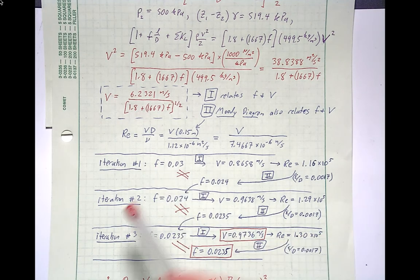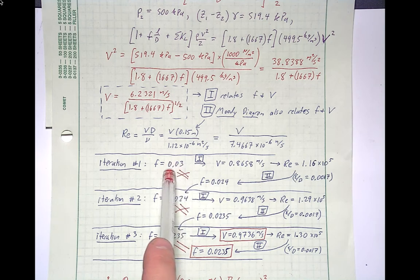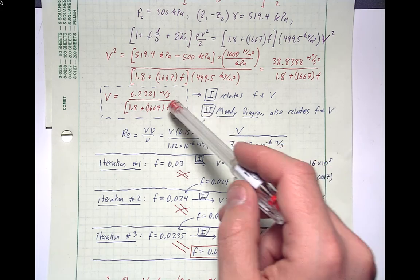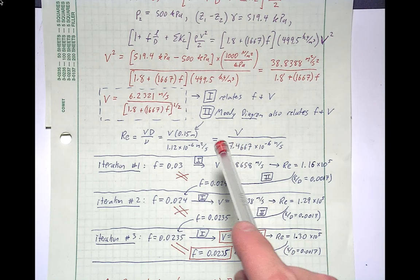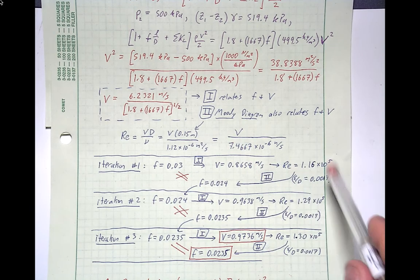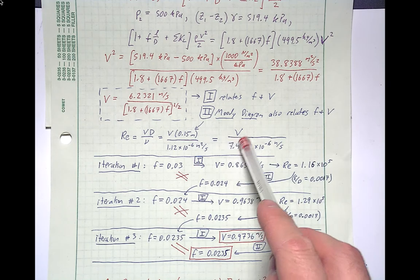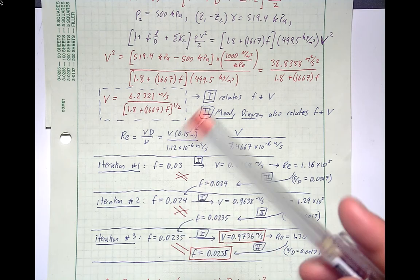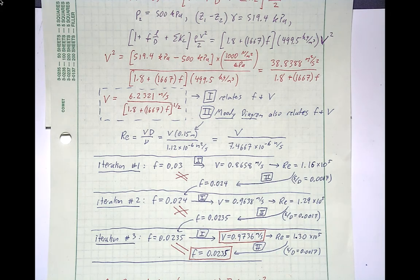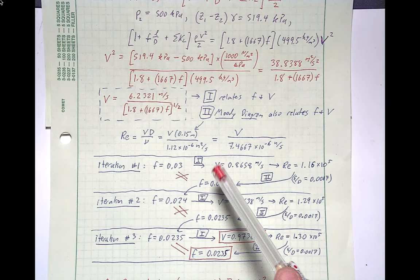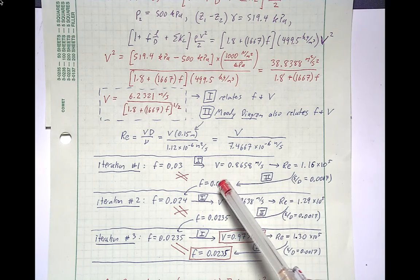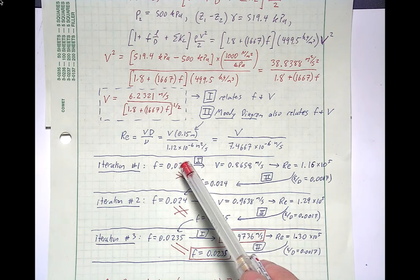The iterative process starts by assuming a friction factor of 0.03. We calculate velocity from the formula, then compute the Reynolds number, then go to the Moody diagram to determine a new friction factor. This gives f = 0.024, which does not equal the original assumption, so we proceed to another iteration assuming f = 0.024.